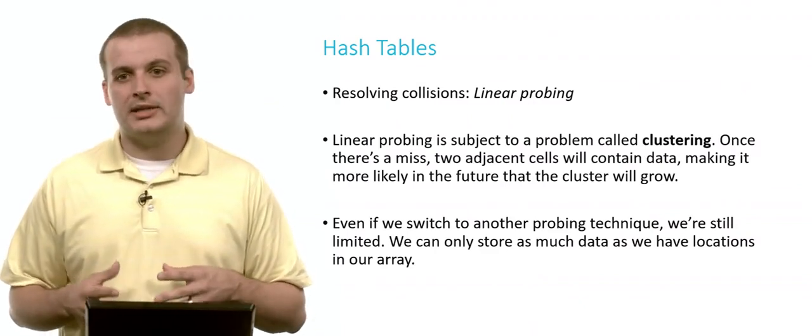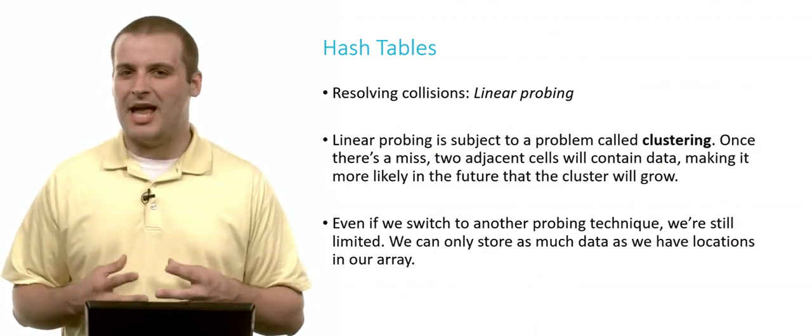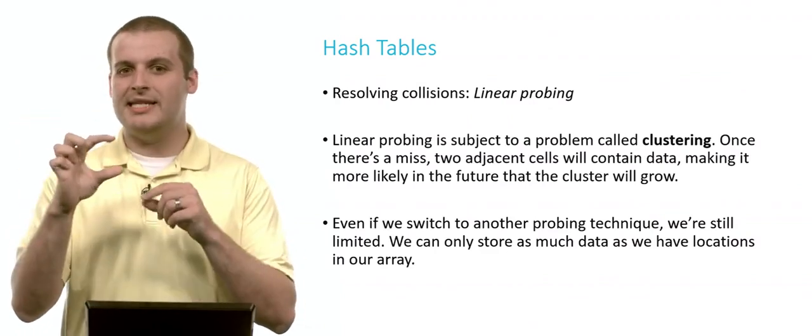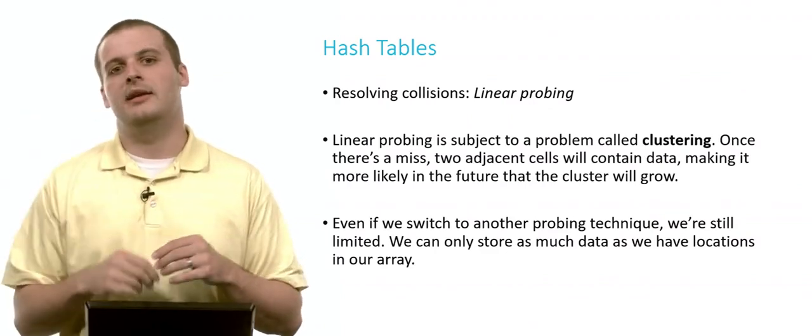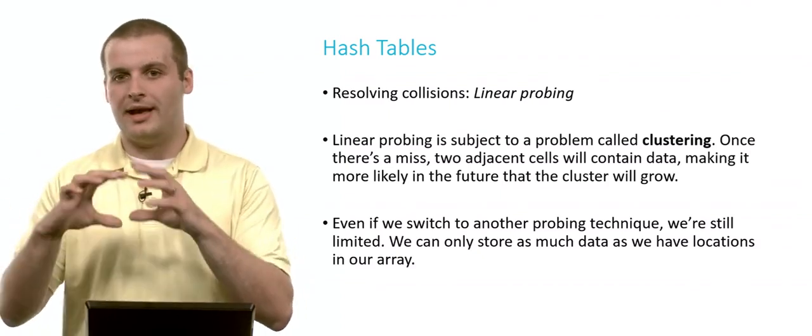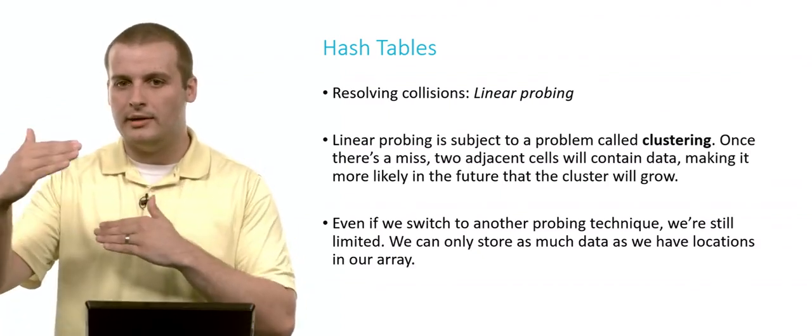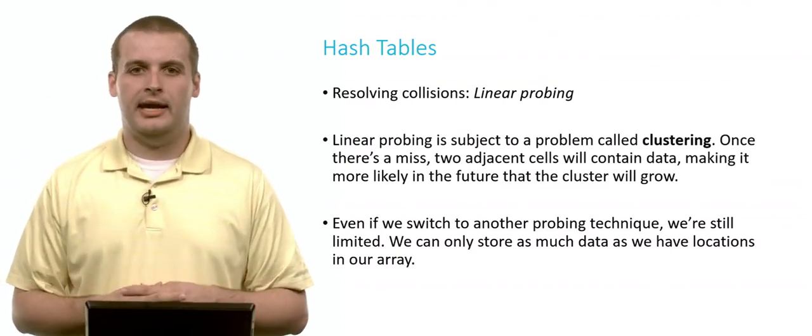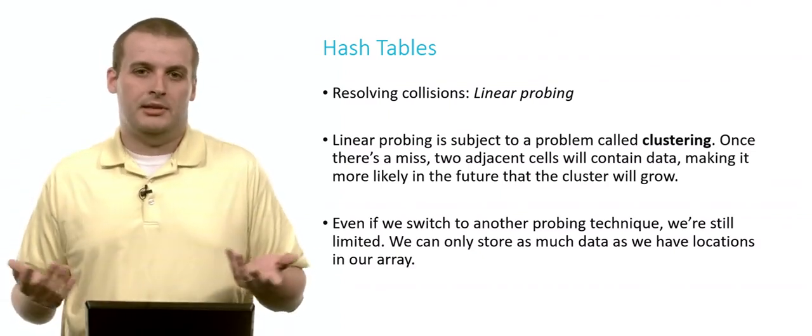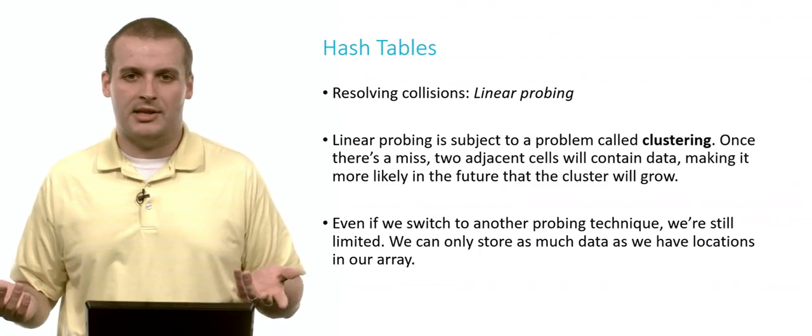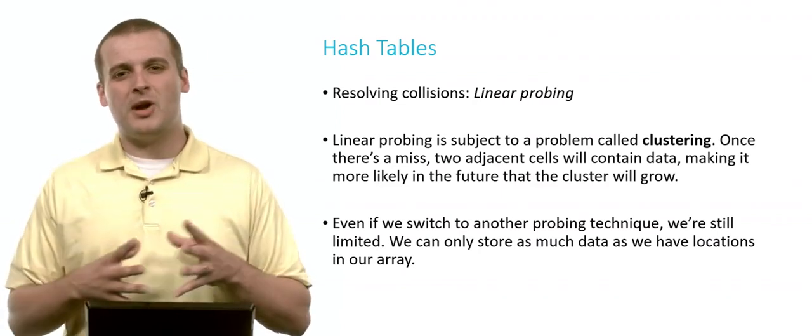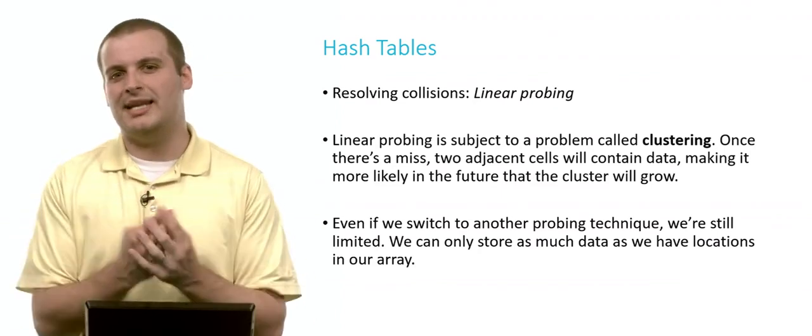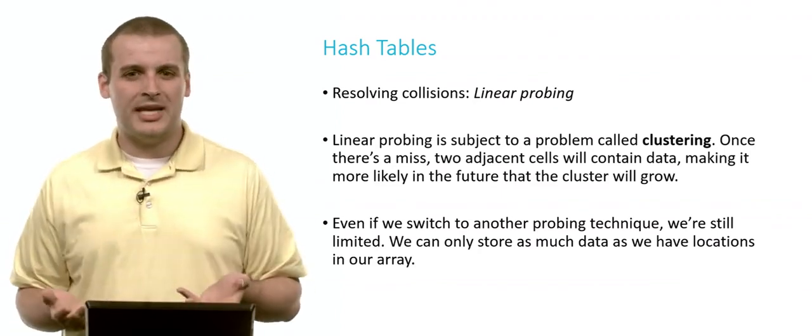This problem that we just saw is something called clustering. And what's really bad about clustering is that once you now have two elements that are side by side, it makes it even more likely. You have double the chance that you're going to have another collision with that cluster. And the cluster will grow by 1. And you'll keep growing and growing your likelihood of having a collision. And eventually, it's just as bad as not sorting the data at all.